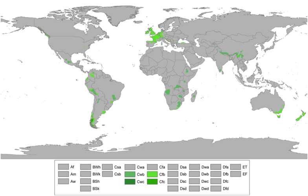Areas with subpolar oceanic climates feature an oceanic climate but are usually located closer to polar regions. As a result of their location, these regions tend to be on the cool end of oceanic climates. Snowfall tends to be more common here than in other oceanic climates. Subpolar oceanic climates are less prone to temperature extremes than subarctic climates or continental climates, featuring milder winters than these climates.